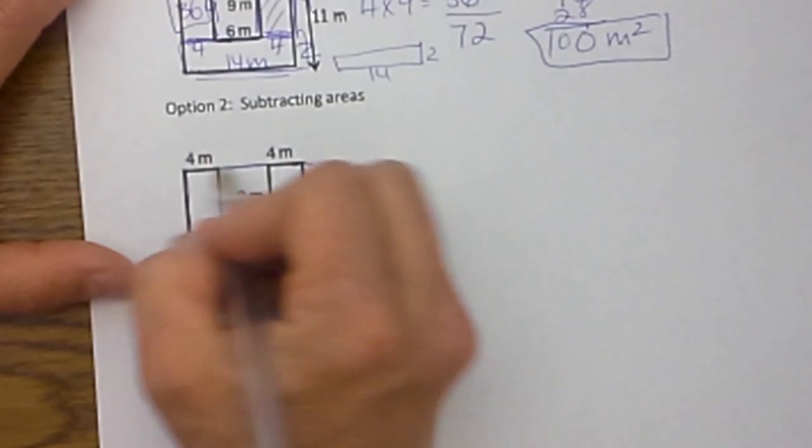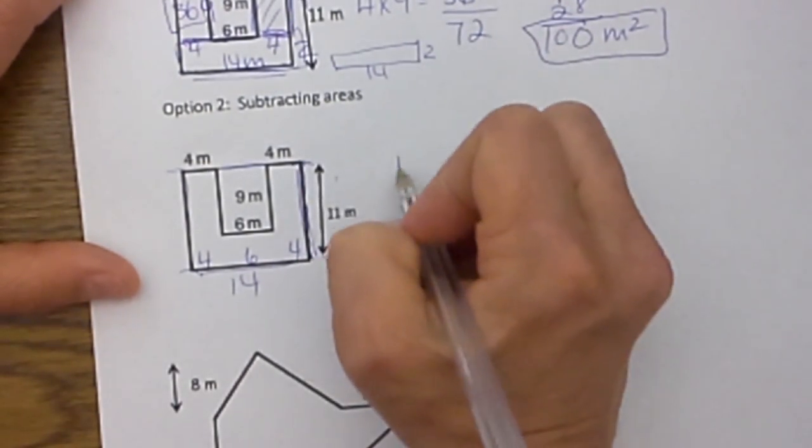Now this next one, the same figure as the second example, I'm actually going to show you the subtraction method. What I'm going to do is I'm going to look at it as one large figure. So I'm going to close this off and make a big rectangle. So I can now figure out this length, well a minute ago didn't we say that was 4 plus 6 plus 4, so this dimension was 14, okay 14 and the whole side is 11. So I'm going to find the area of the entire figure.